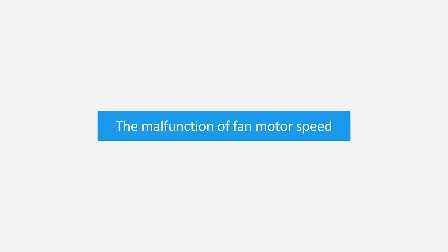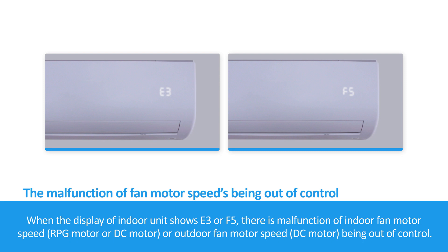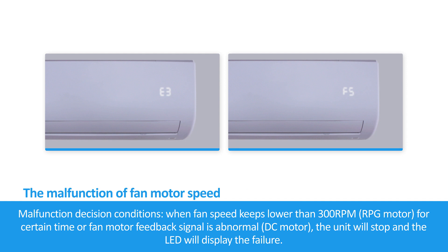The malfunction of fan motor speed. When the display of the indoor unit shows E3 or F5, there is a malfunction of indoor fan motor speed — RPG motor or DC motor — or outdoor fan motor speed, with DC motor being out of control. Malfunction decision conditions: when fan speed keeps lower than 300 RPM for a certain time, or the fan motor feedback signal is abnormal, the unit will stop and the LED will display the failure.